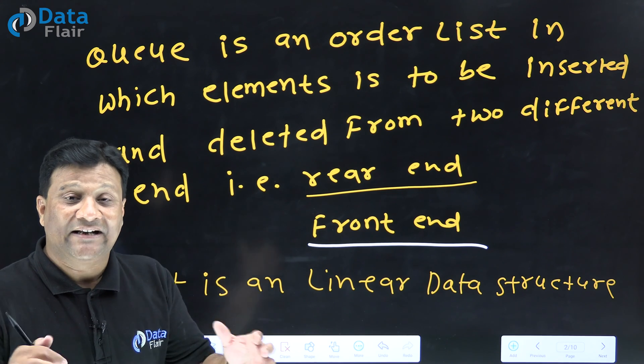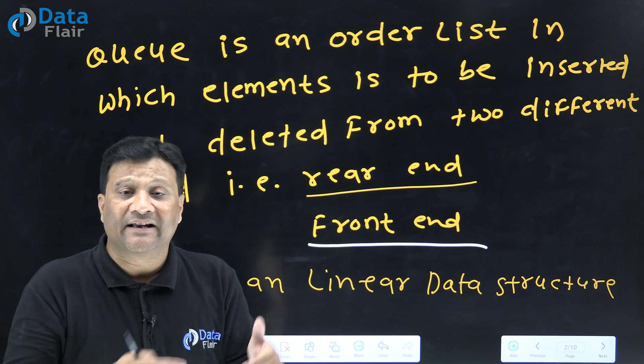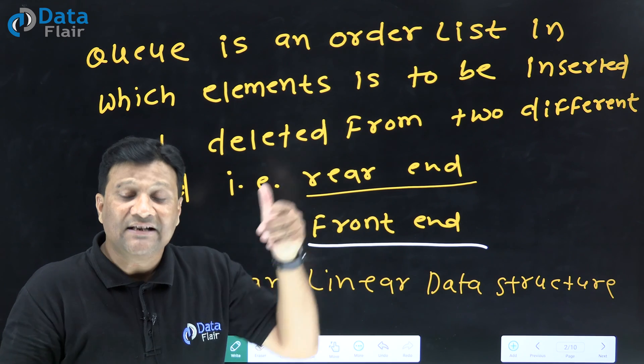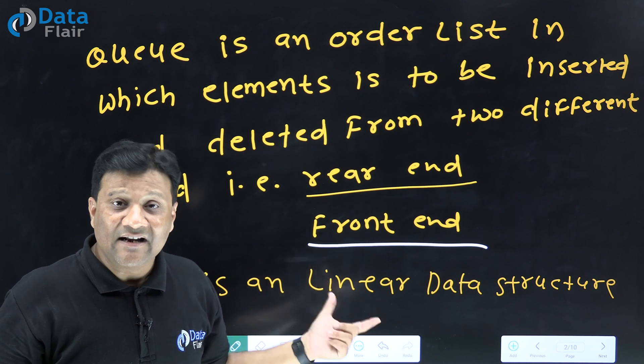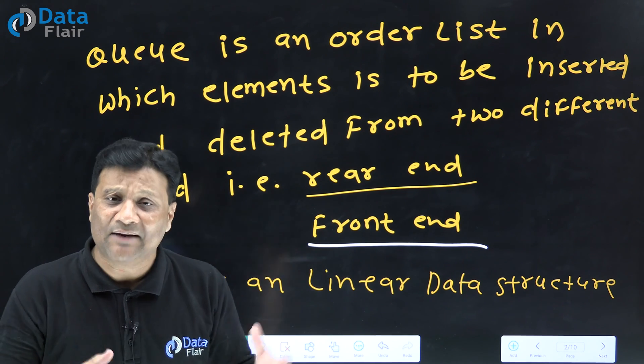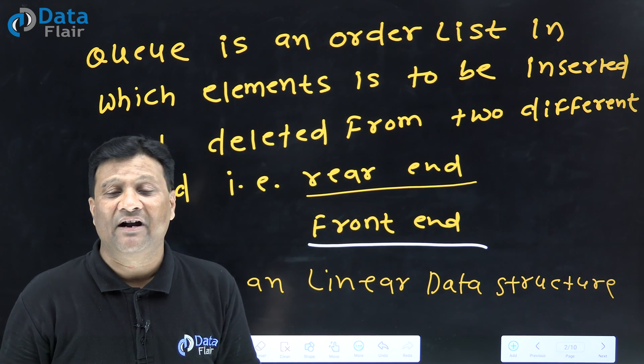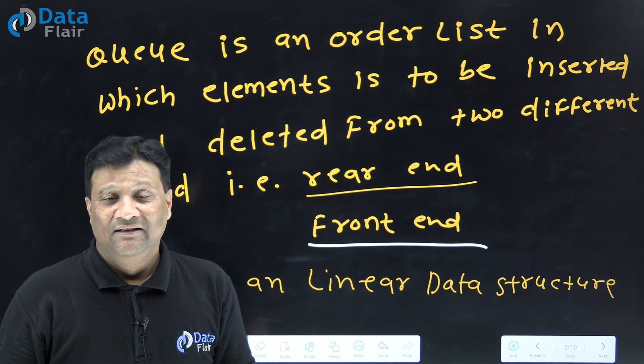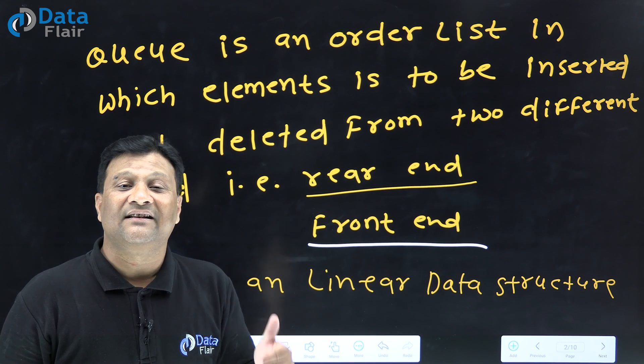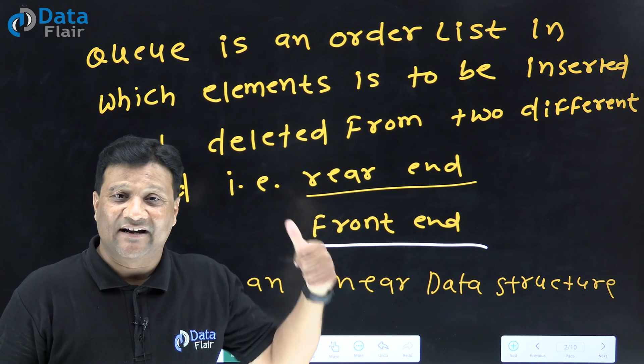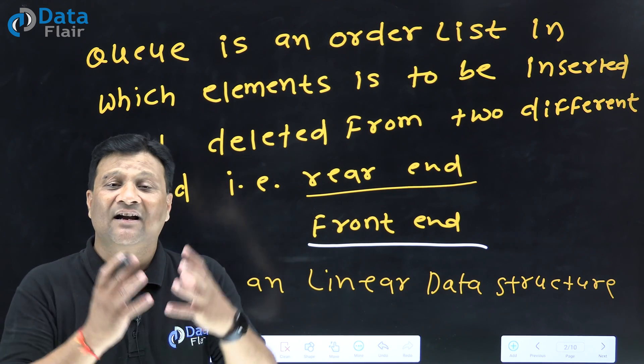So Queue maintains two ends - rear end and front. The end from which we insert element is the rear end. And again it is an example of linear data structure. We divided data structure into two categories: linear and non-linear. In linear data structure, we saw Stack concept, and in the same linear data structure series, we are discussing the second concept and that is Queue.